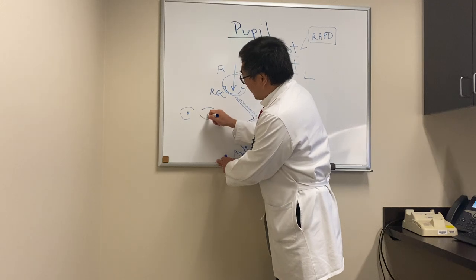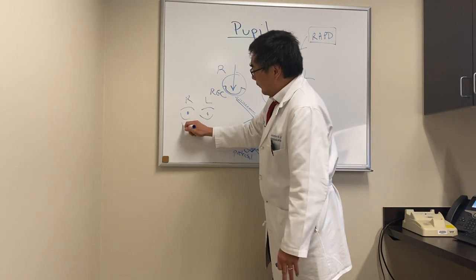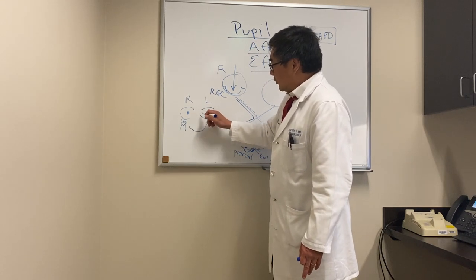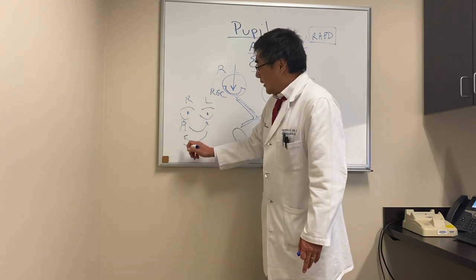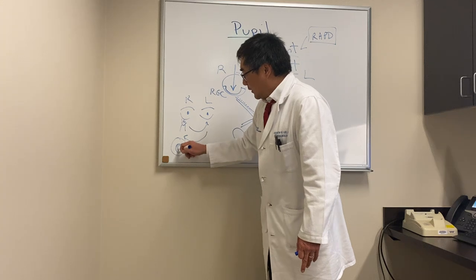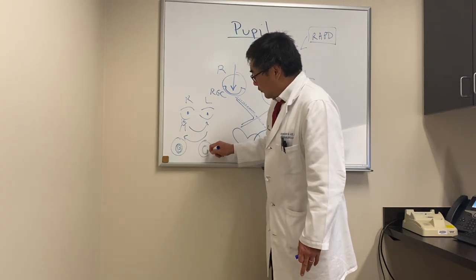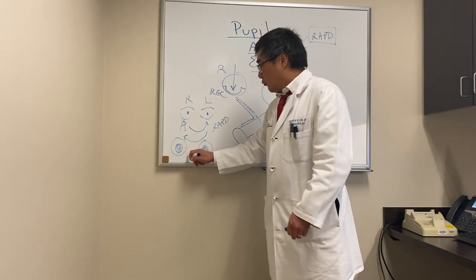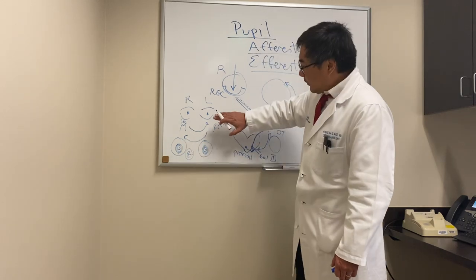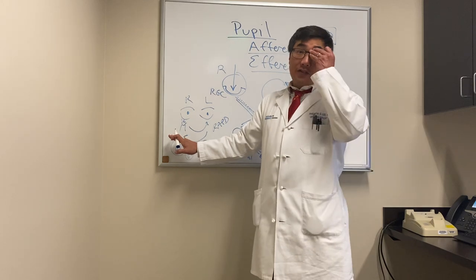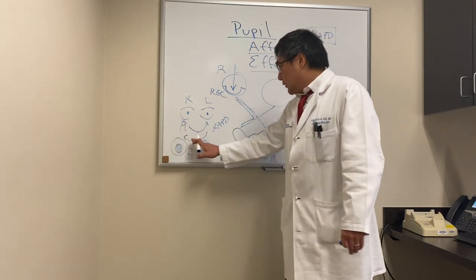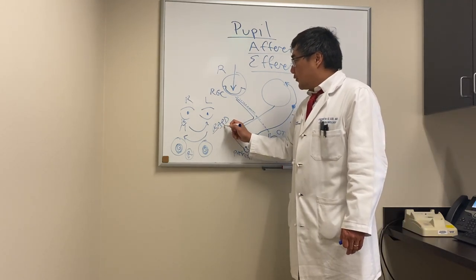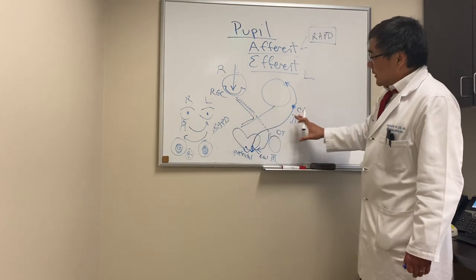When we swing the light, the reaction to the right pupil constricts both pupils. When we swing the light to the left it should normally stay the same, but if we swing the light back to the right and there's a right relative afferent pupillary defect, that pupil will dilate — and because of the direct and consensual response, the left pupil also dilates. So when we have an RAPD on the right, both pupils dilate when swinging from the left (normal) eye to the involved right eye, and both pupils constrict when swinging back. We are taking advantage of the relative difference in the afferent pathway to detect the defect.